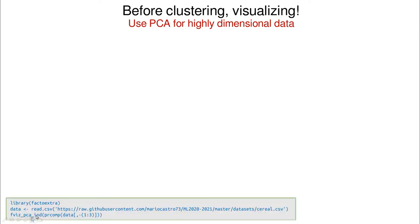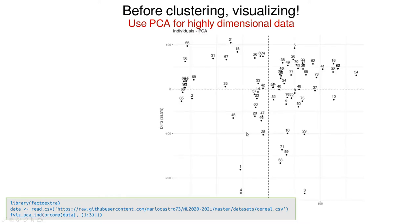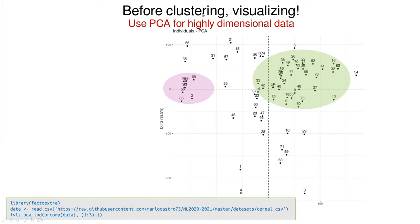In that case we can use principal component analysis in order to plot it. We use the function fviz_pca from the factoextra library, and this gives the projection onto the first two principal components. Here it's not entirely clear, but you can see some cluster structure — a dense group of points, maybe another cluster extending to one part, and possibly a couple of smaller clusters which could be outliers.